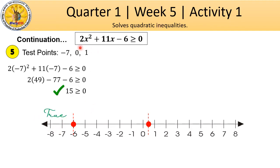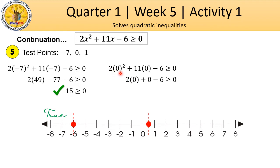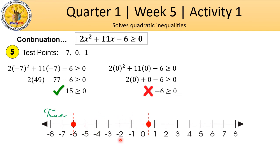Next test point is 0. Substituting: 2 times 0 squared is 0, plus 11 times 0 is 0, minus 6 equals negative 6. Is negative 6 greater than or equal to 0? Of course not. So this region is false.